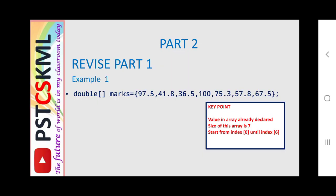We will revise what we learned in Part 1. In Part 1, we learned that marks is assumed to be an array declared with double square brackets. The values in the array are already declared using braces. The size of this array is 7, with values: 97.5, 41.8, 36.5, 175.3, 57.8, 67.5. The index starts from 0 until 6, as covered in our previous video.